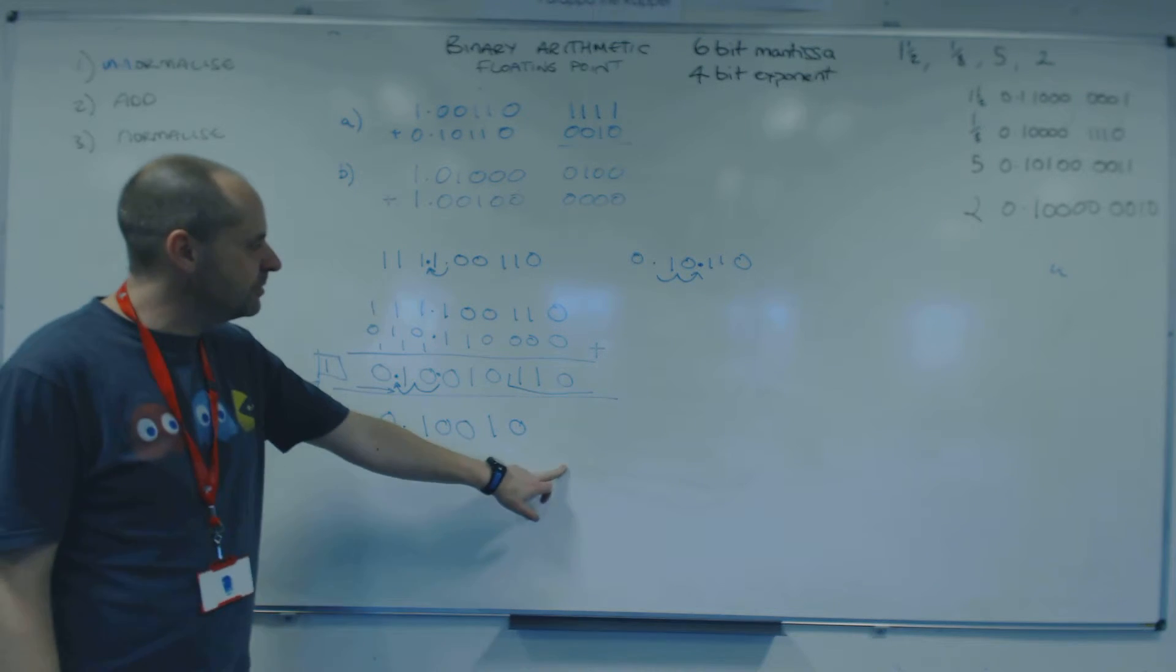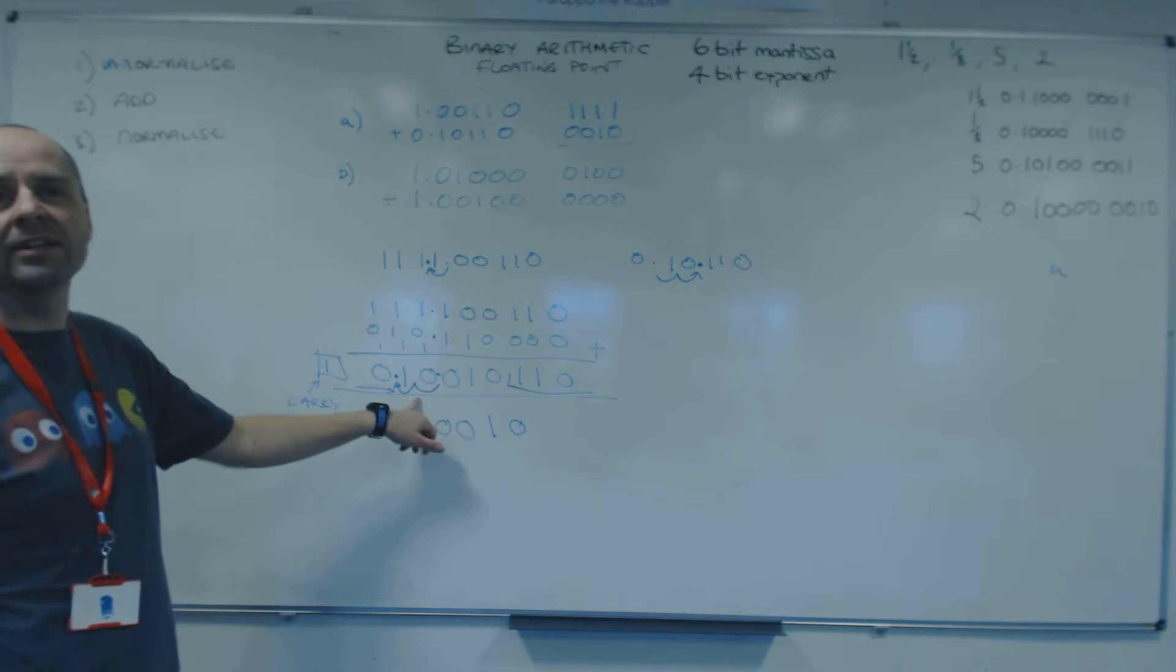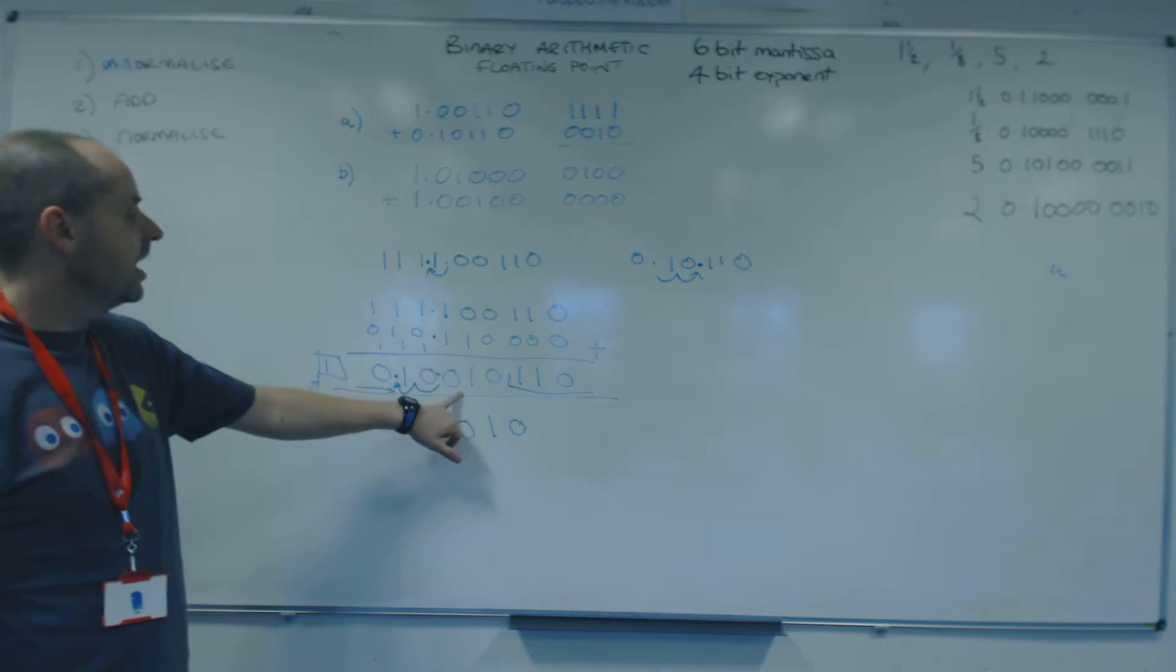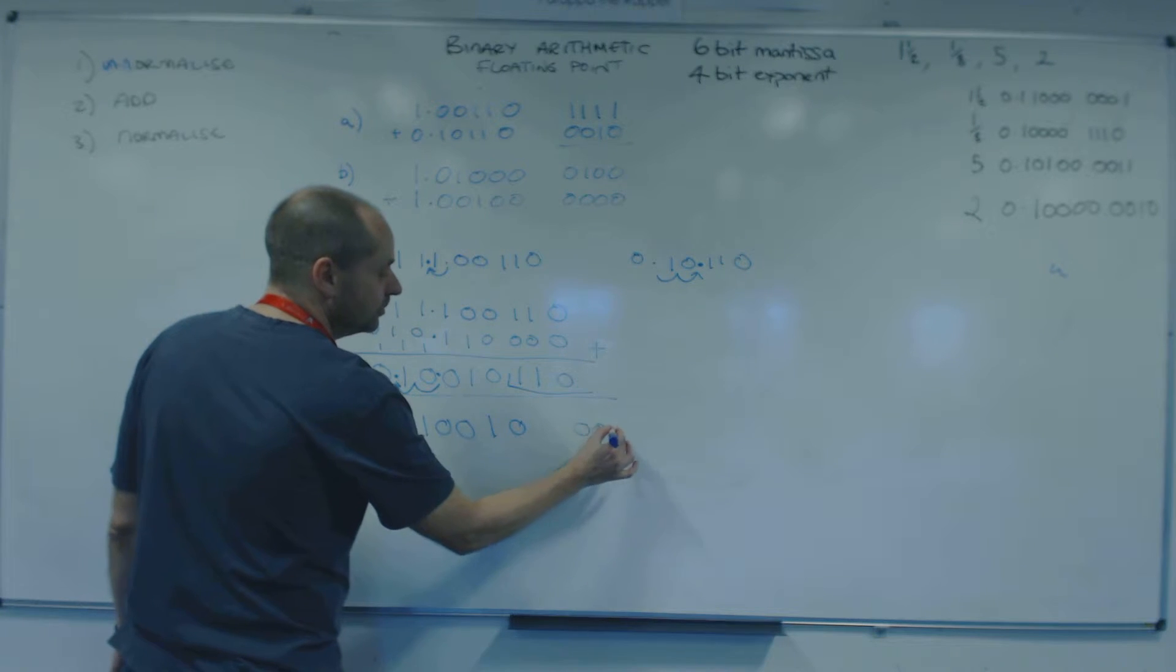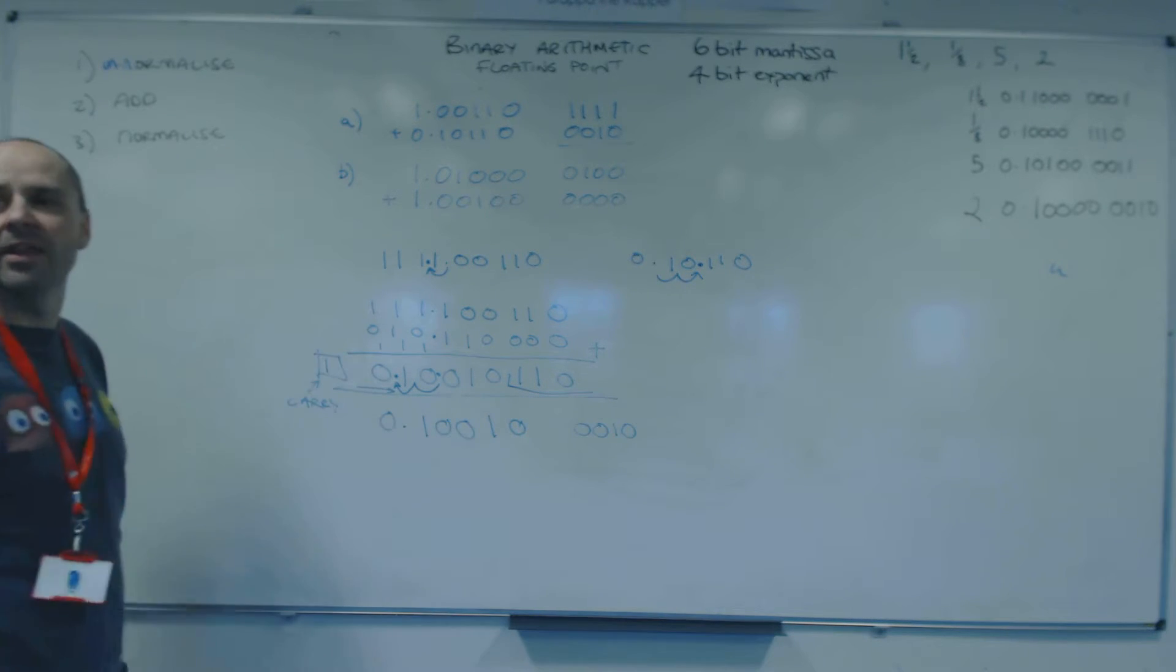So we end up with that for the mantissa. We moved it twice. And we moved it that way. So we end up with plus 2. Everybody get that?